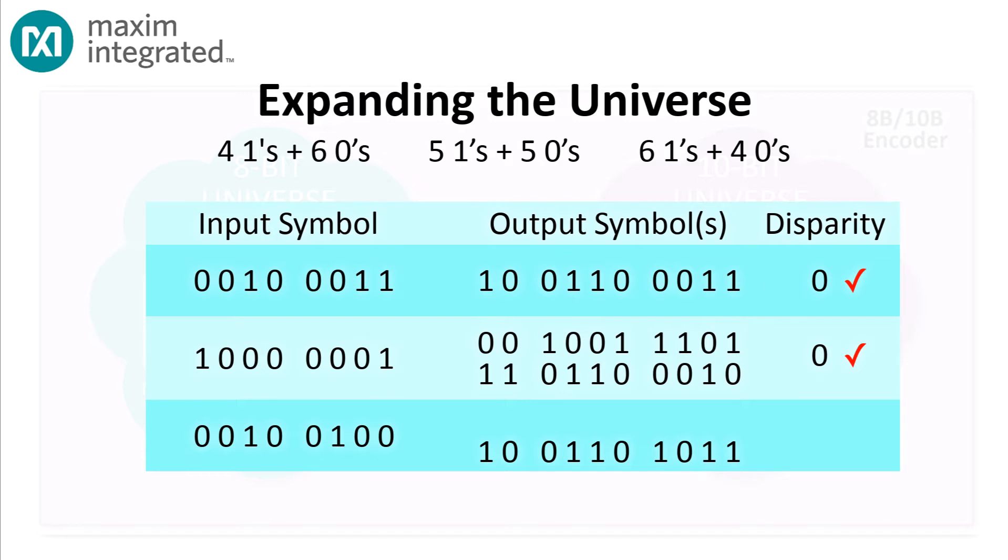And some 8-bit input codes will have two 10-bit representations, one with 6 1s and 4 0s, and a second code with 4 1s and 6 0s, and those are the interesting ones.